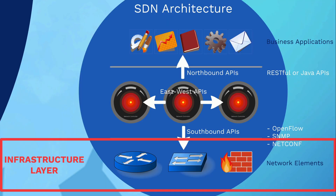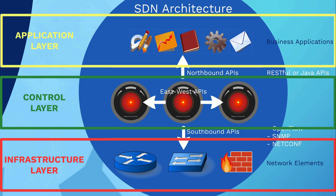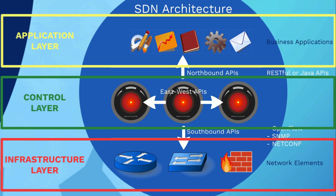Taking a step back, SDN architecture is defined by three layers: the network elements at the bottom form the infrastructure layer, controllers are part of the control layer, and business applications are part of the application layer.